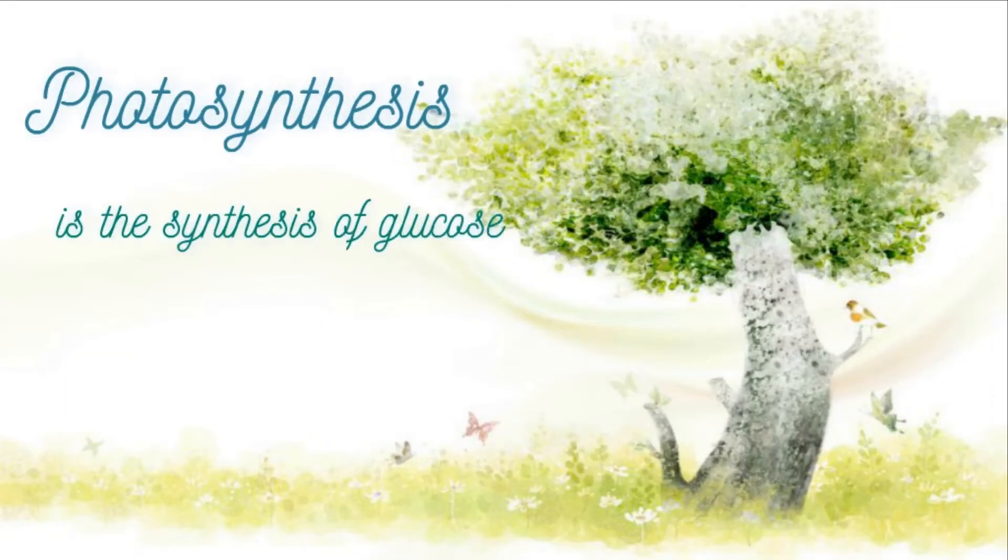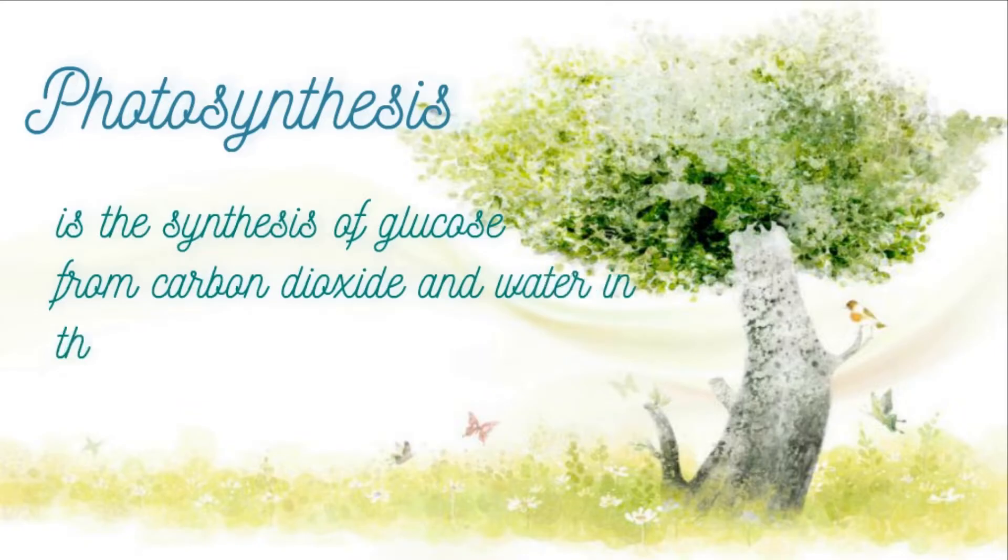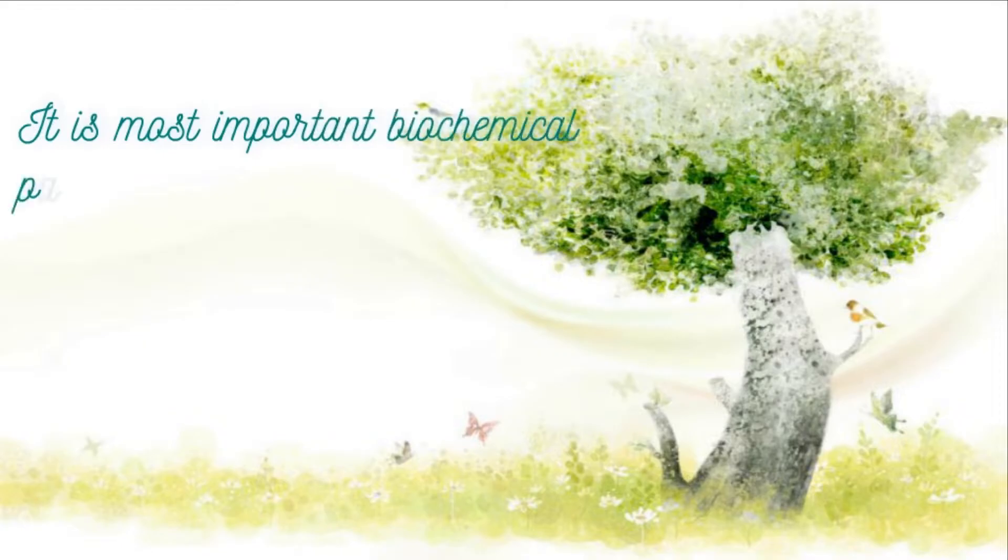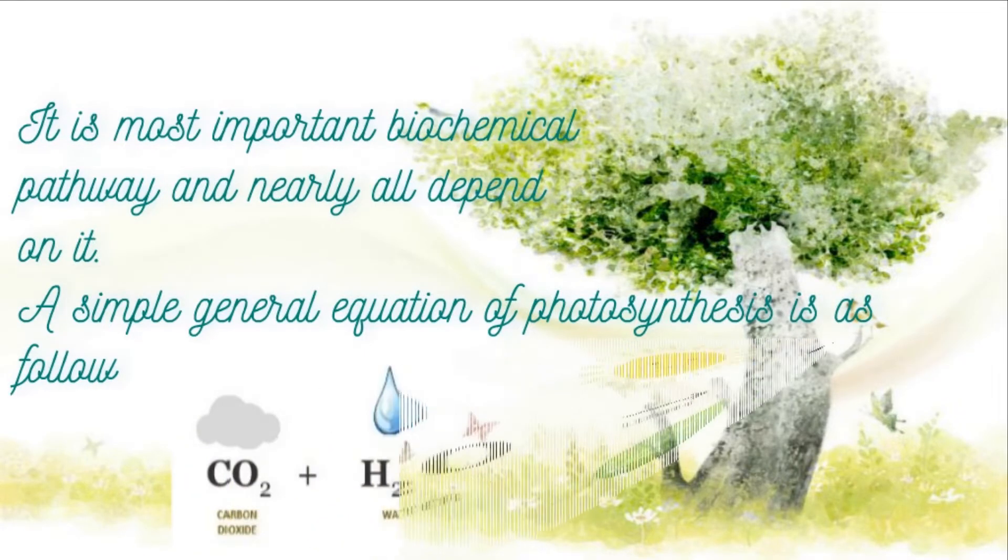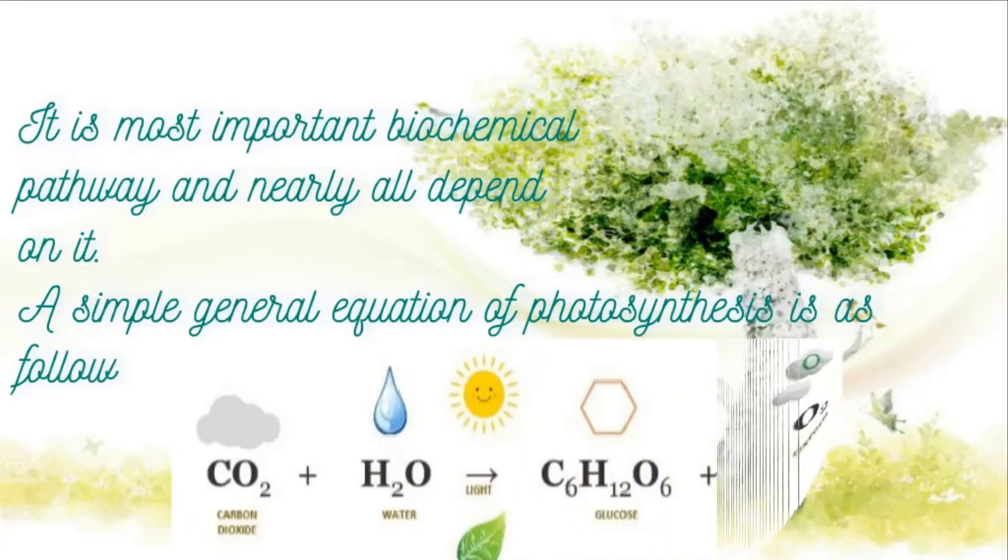Photosynthesis is the synthesis of glucose from carbon dioxide and water in the presence of sunlight, with oxygen as a byproduct. It is the most important biochemical pathway and nearly all life depends on it. The simple general equation for photosynthesis is: carbon dioxide and water in the presence of sunlight form sugar, water, and oxygen as byproduct.